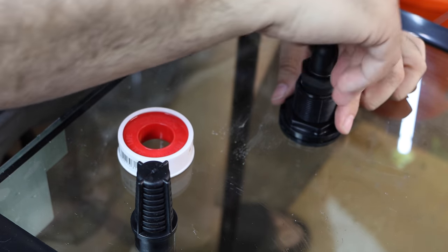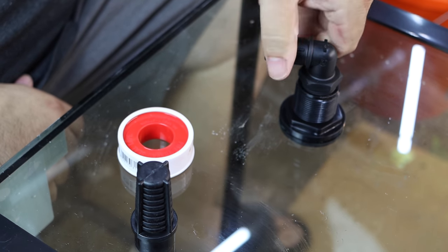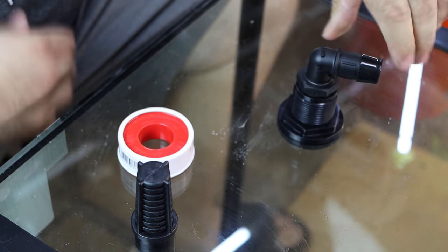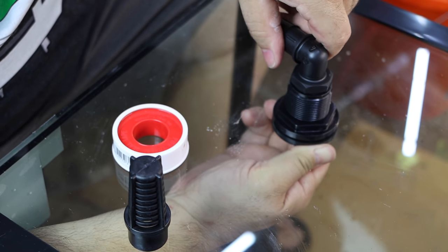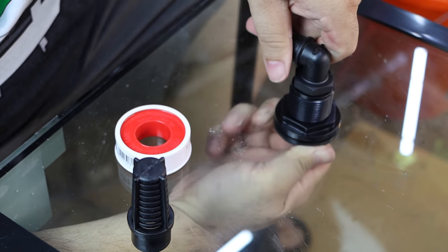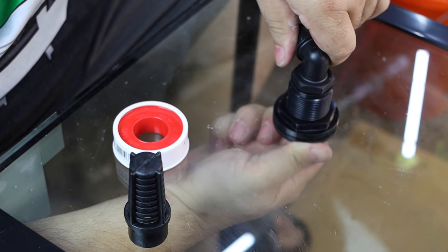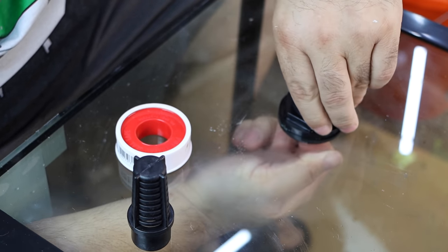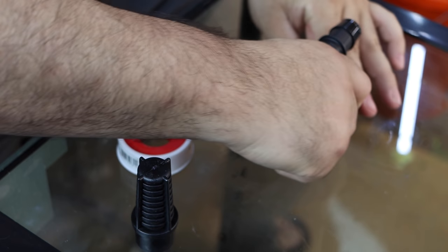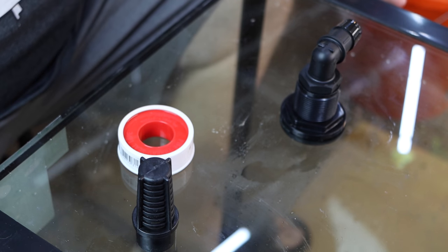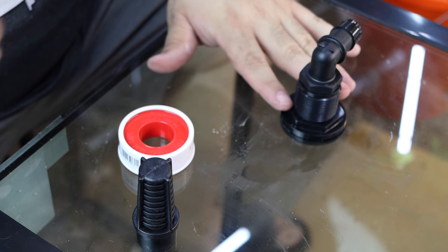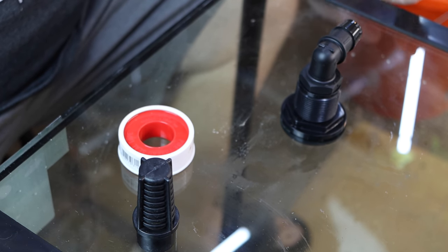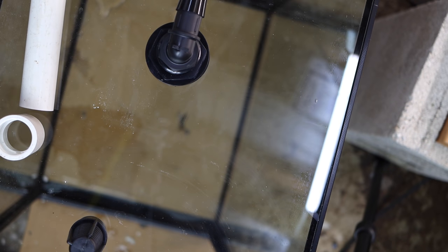Now the reason why I didn't really tighten this is because I want this 90 degree elbow facing down. In order to make it facing down we have to hold this where we want it, tighten it up, and then tighten our nut. You could put a pair of pliers on here and gently tighten if it's leaking, but I wouldn't. I would just tighten the nut with my hand as hard as I can. Alright now we got to build a standpipe.